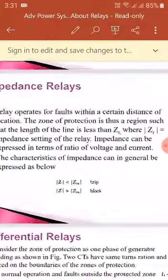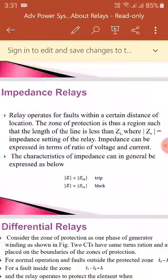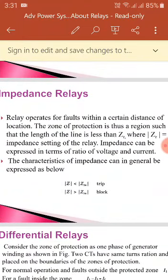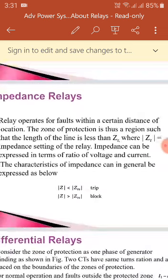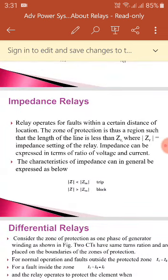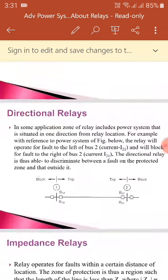In case of impedance relays, if the impedance seen is less than the set impedance, then the relay trips. If the impedance seen is greater than the set impedance, the relay restraints. Impedance relay is a kind of distance relay.